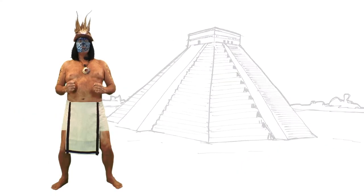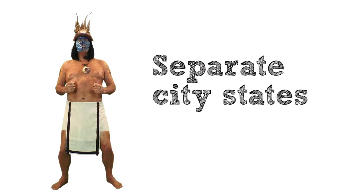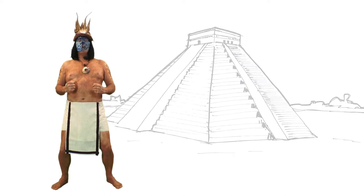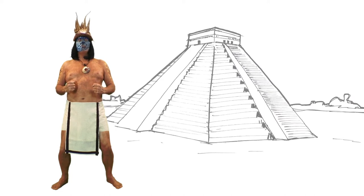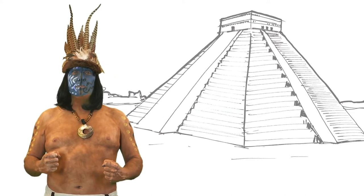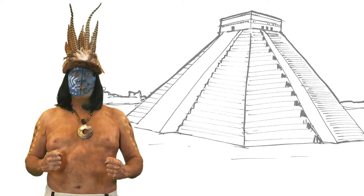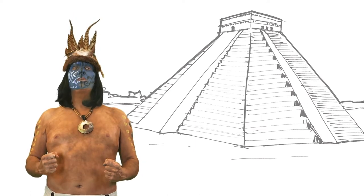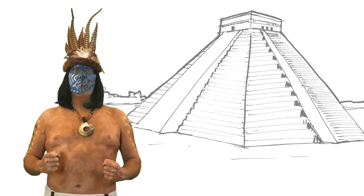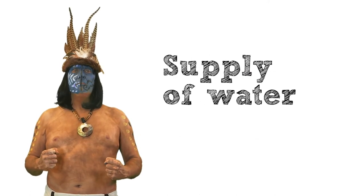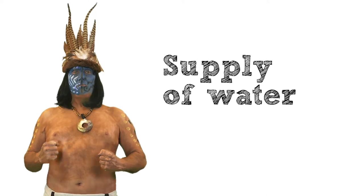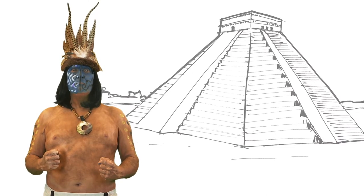Our Maya civilization is made up of separate city-states, each with its own ruler, laws and traditions. One of our most important cities is Chichen Itza, which means mouth of the well of the Itza, and refers to the two natural wells we call sinkholes that provide a plentiful water supply. Well, you can't build a city if you don't have water.